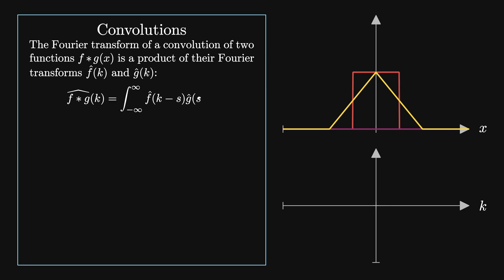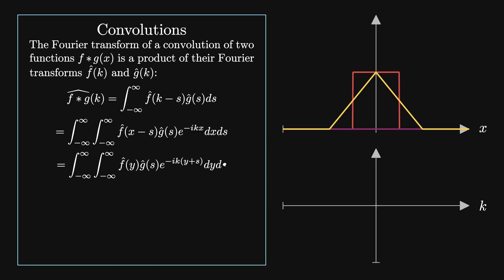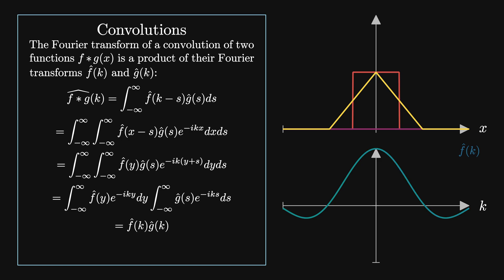The Fourier transform of a convolution of two functions f and g is a product of their Fourier transforms. The Fourier transform of f star g is given by the integral from minus infinity to infinity of the integral from minus infinity to infinity of f-hat of y times g-hat of s times e to the minus i k times y plus s dy ds. We can split this into a product of two integrals: the integral of f-hat of y e to the minus i k y dy, times the integral of g-hat of s e to the minus i k s ds, which equals f-hat of k times g-hat of k. We can use this fact to solve inhomogeneous boundary value problems.